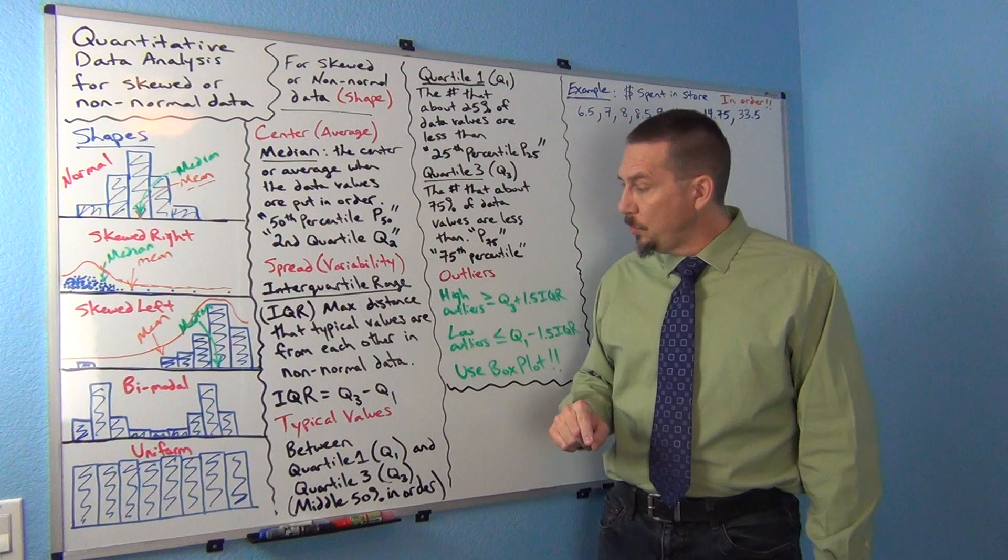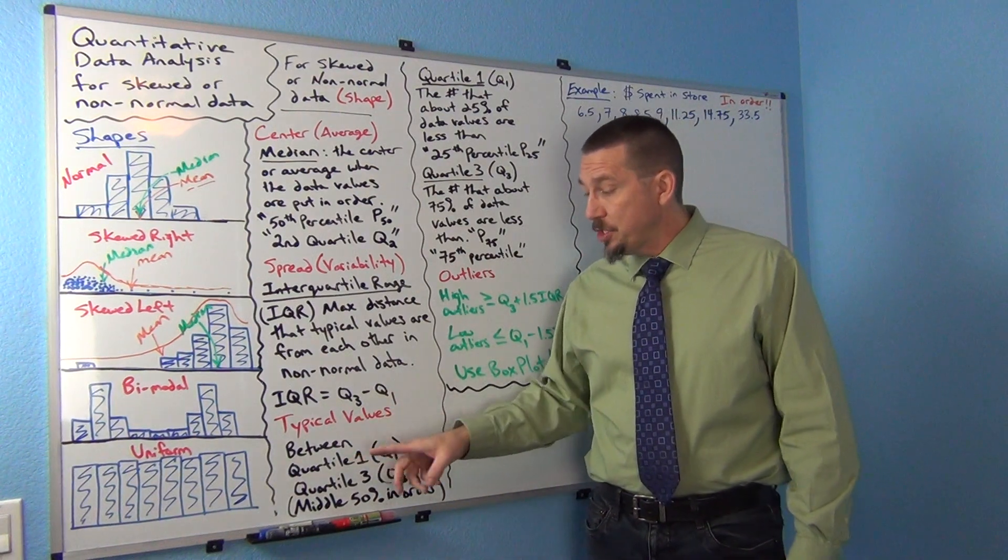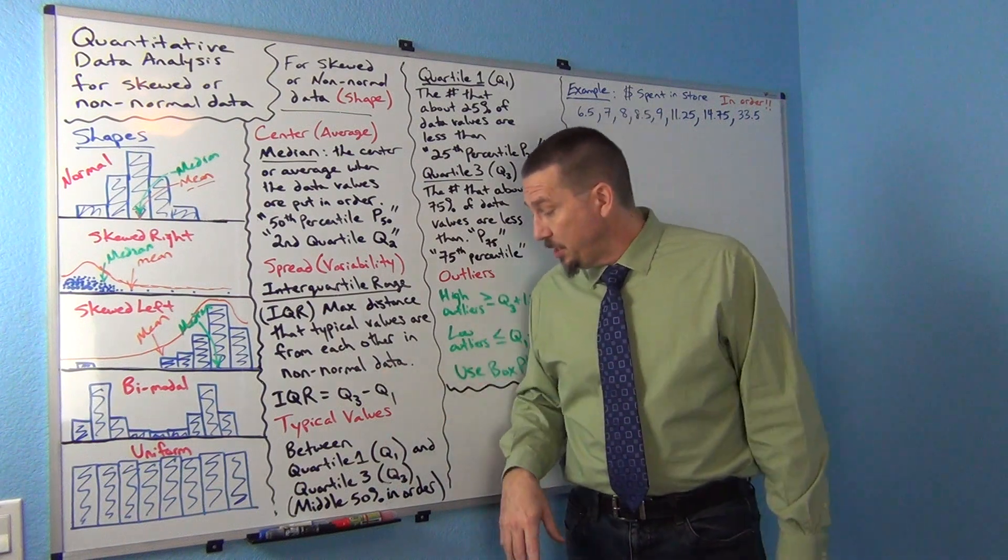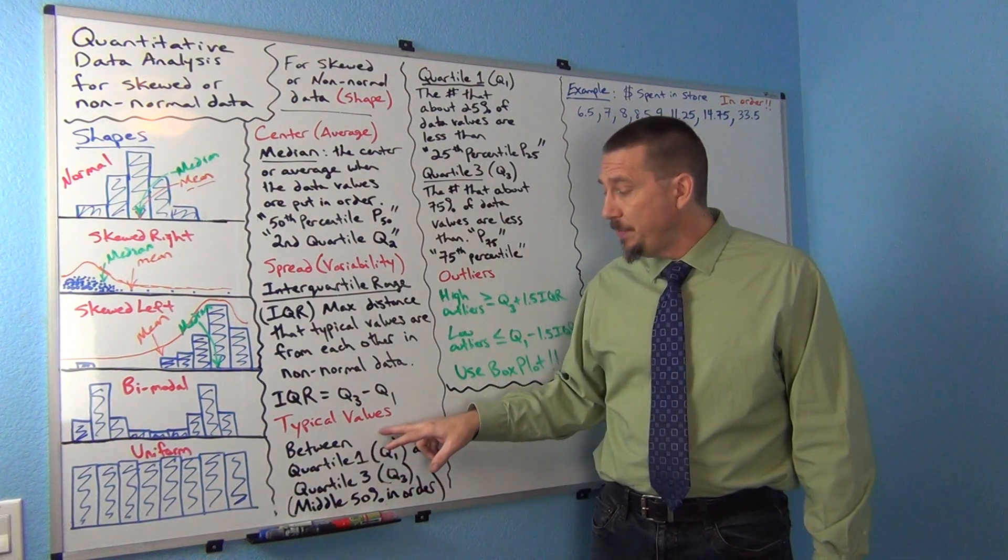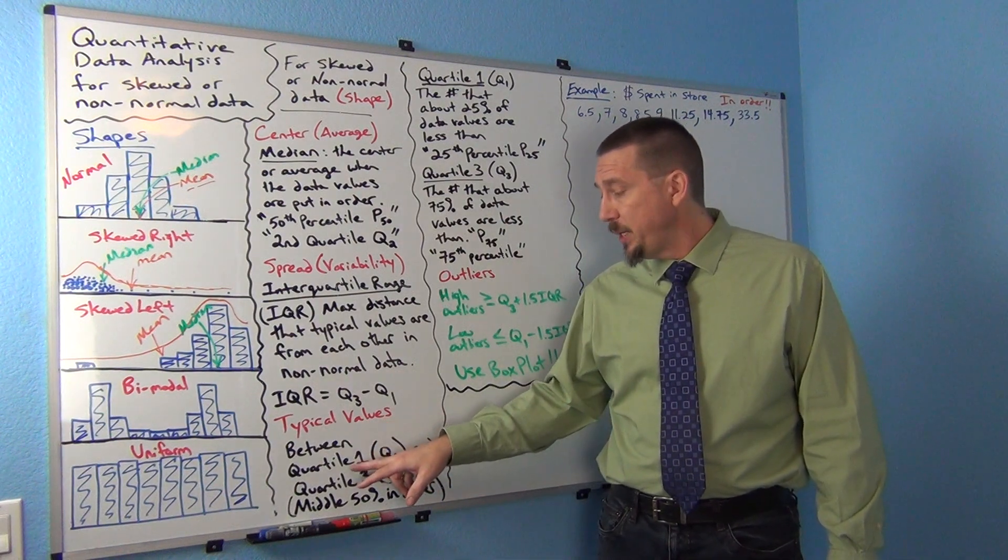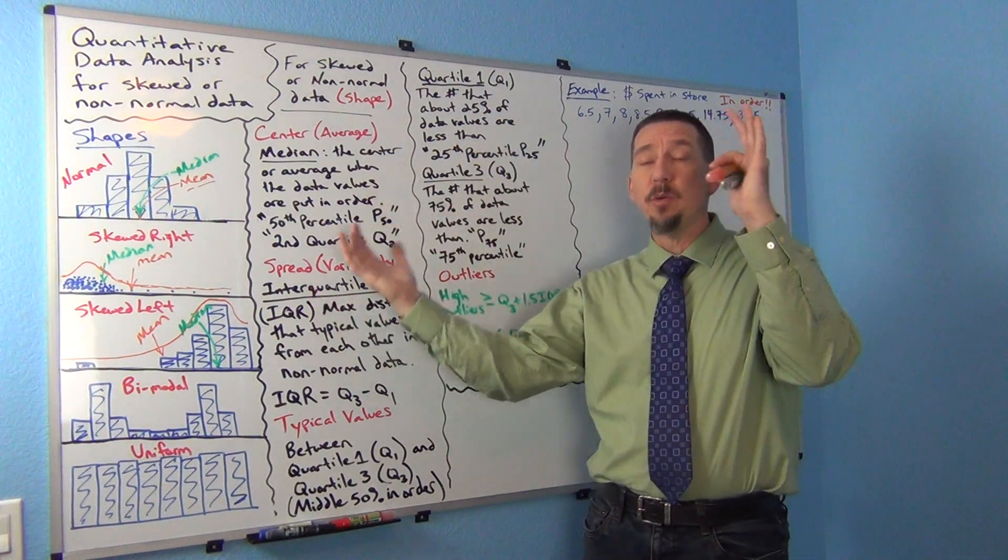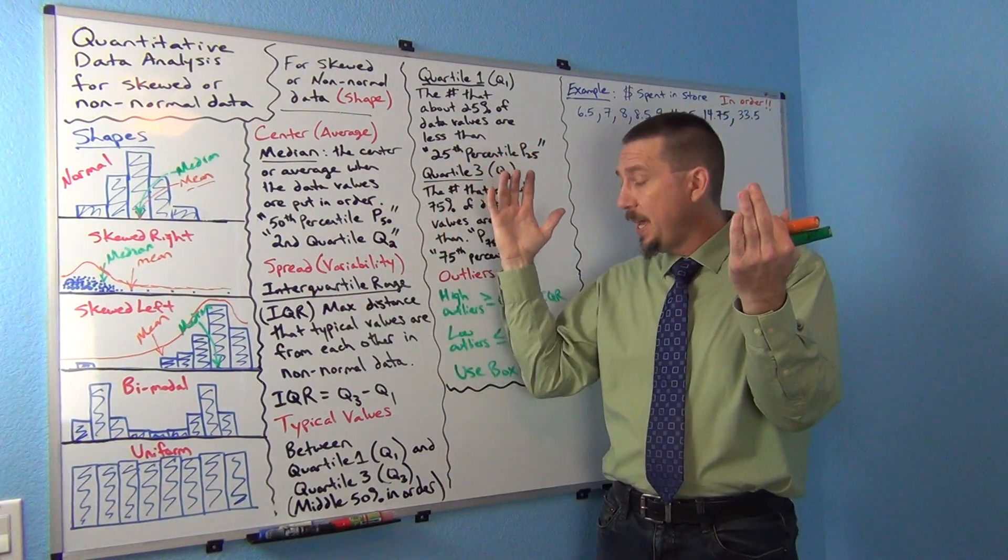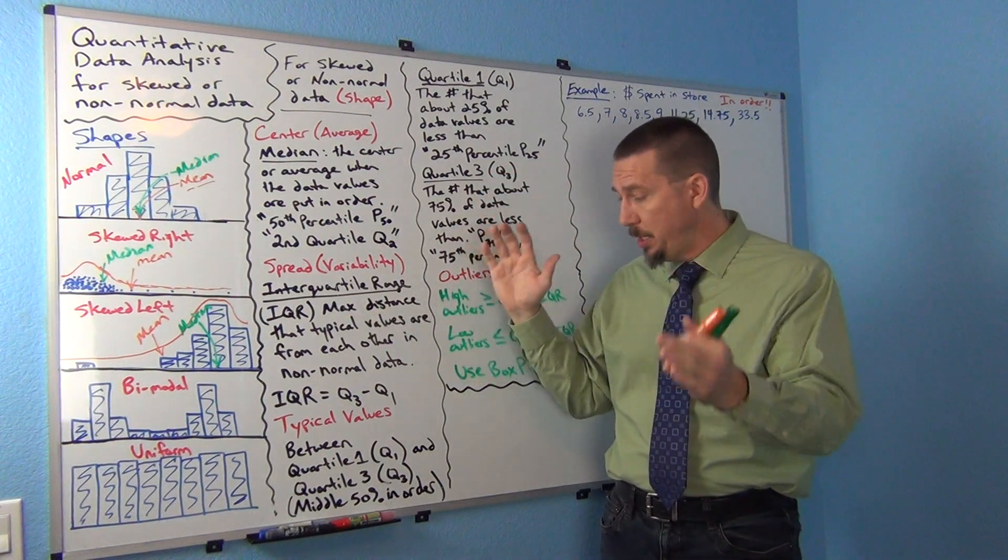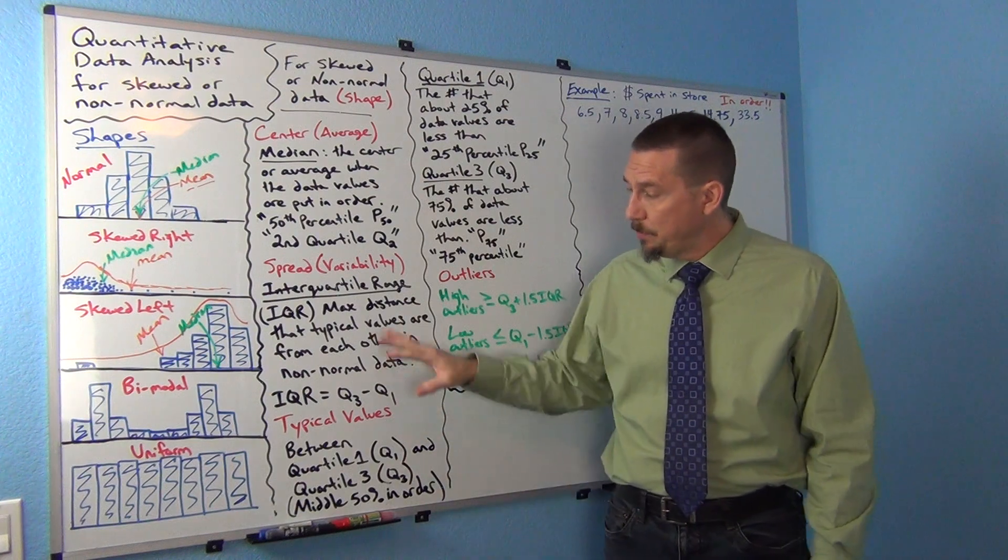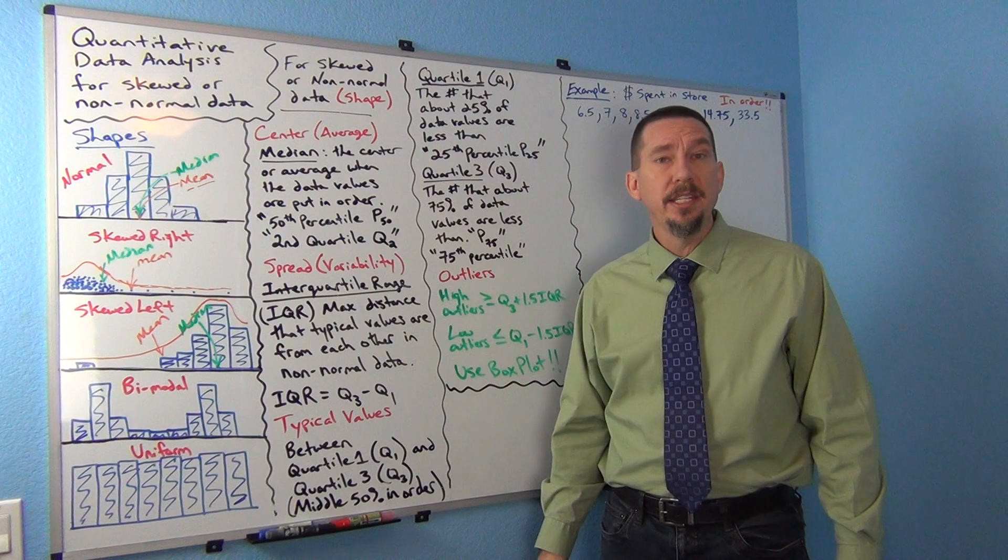Now what about typical values? We don't have to do any fancy calculations. It's already been done for us by the computer. The typical values in the data set are going to be between quartile 1 and quartile 3. The distance between quartile 3 and quartile 1 is the IQR. Both of these are measuring the middle 50% of the data when the data is in order.